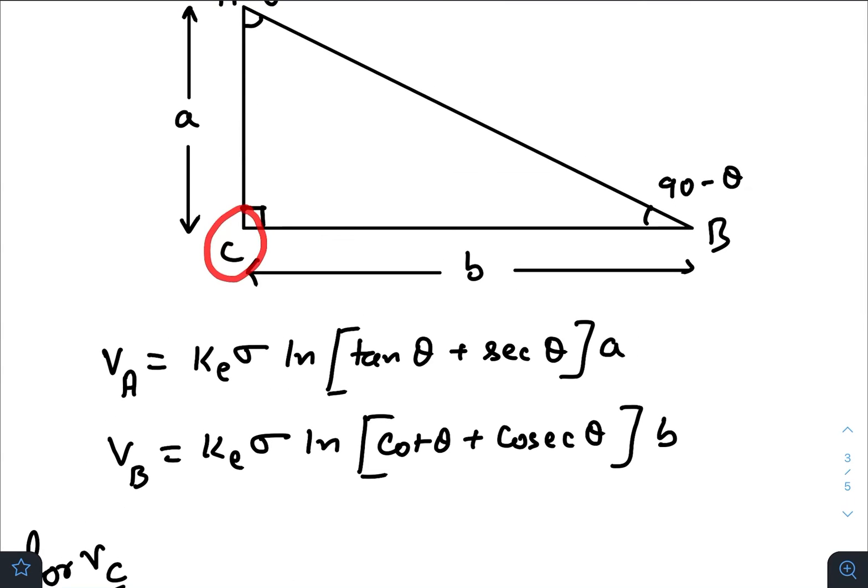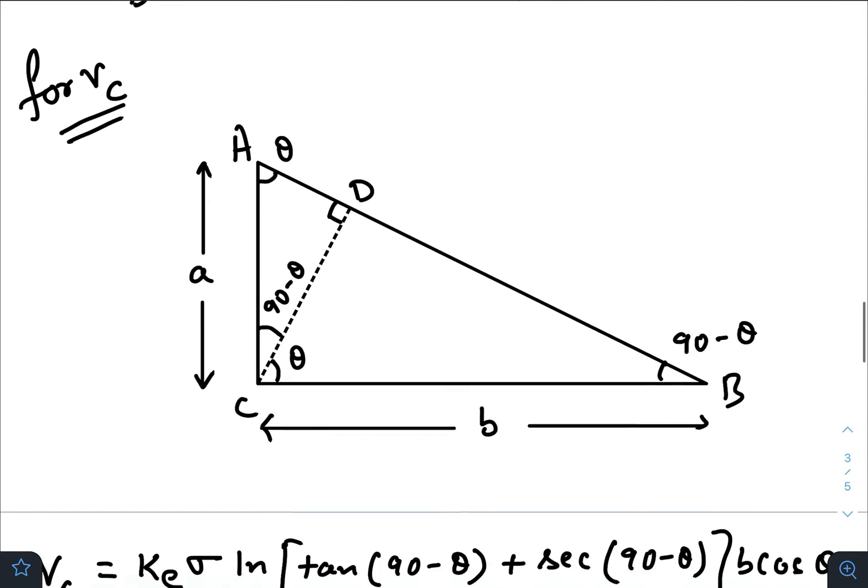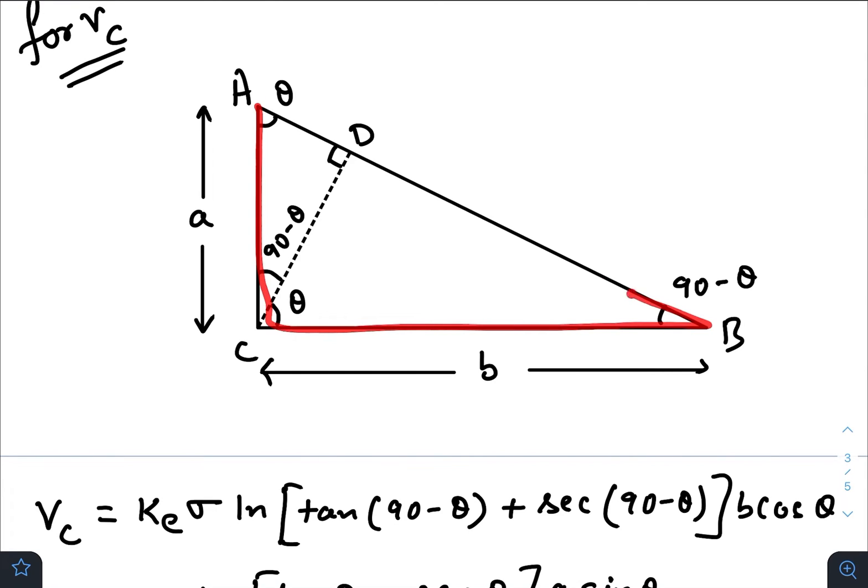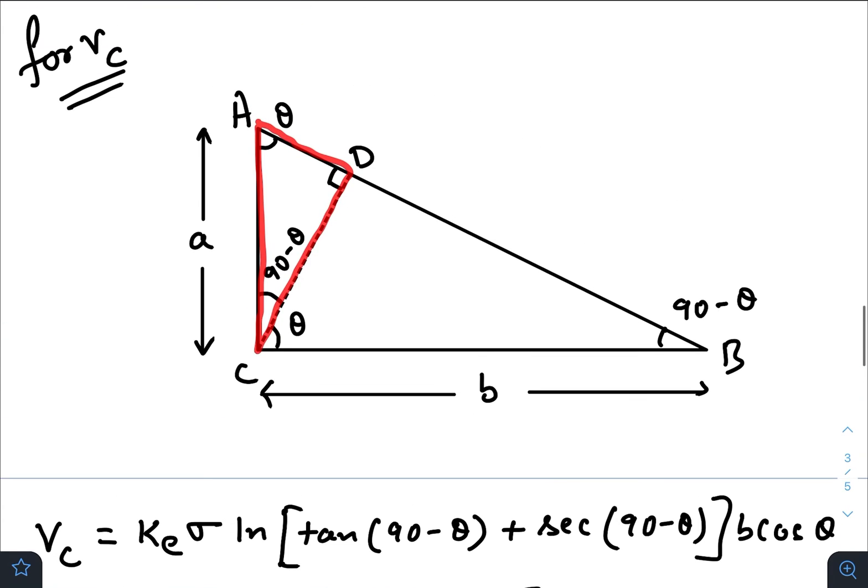But here we will face some problem. For that, we need to break this whole triangle into two parts. Just draw a normal from point C to this line AB, so we have two triangles now—this one and this one. Now potential at point C will be nothing but the sum of the potential due to these two triangles. So let us consider this triangle first.